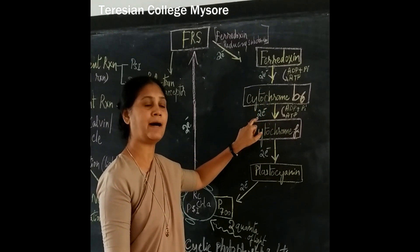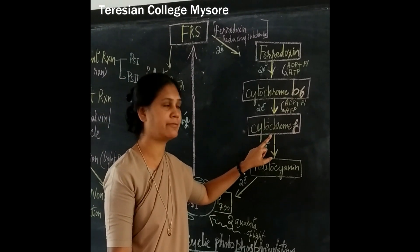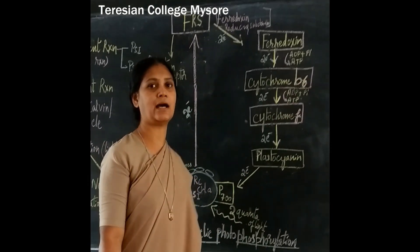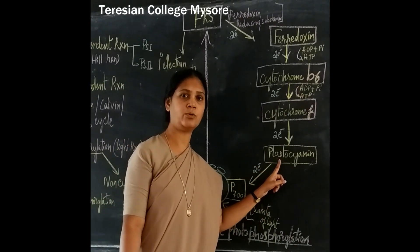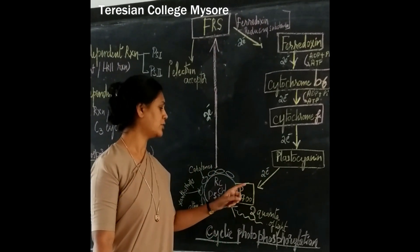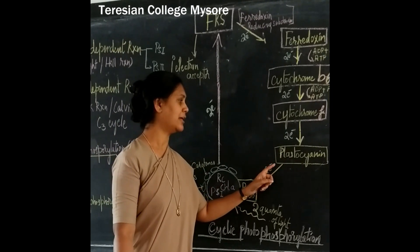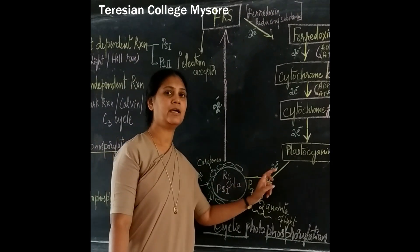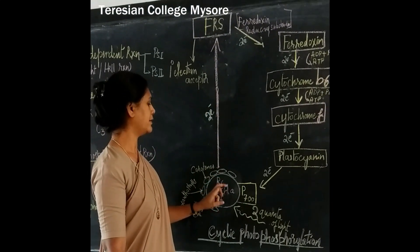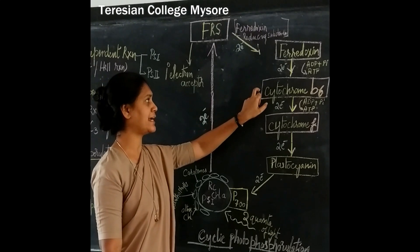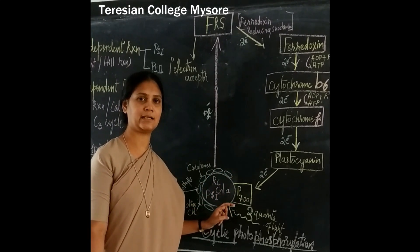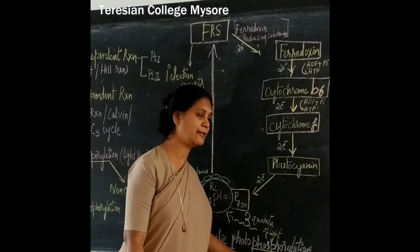Another ATP is produced when two electrons are passed from cytochrome B6 to cytochrome F, utilizing ATP and inorganic phosphate. Hence, two ATPs are produced. When two electrons pass on to plastocyanin, the plastocyanin gets excited and two electrons are pushed towards P700. Hence, the electrons which were liberated from chlorophyll A get back to the base reaction center. The movement of electrons from chlorophyll A, then to ferredoxin, then cytochrome B6, F, and plastocyanin is in a cycle. Hence, it is called as cyclic photophosphorylation.